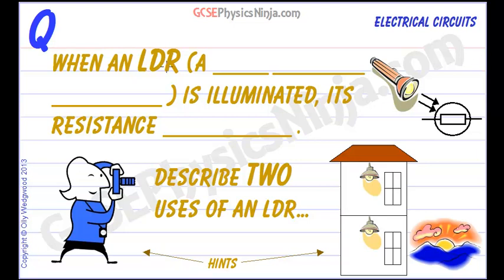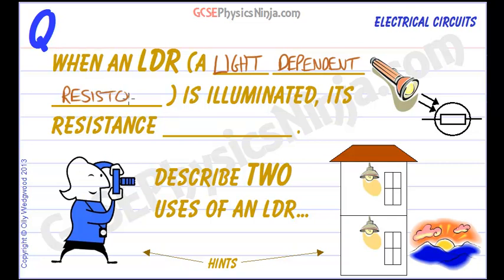When an LDR, which is a light dependent resistor, is illuminated, its resistance decreases. Here's the symbol for an LDR, and we can see the light rays going into this symbol.